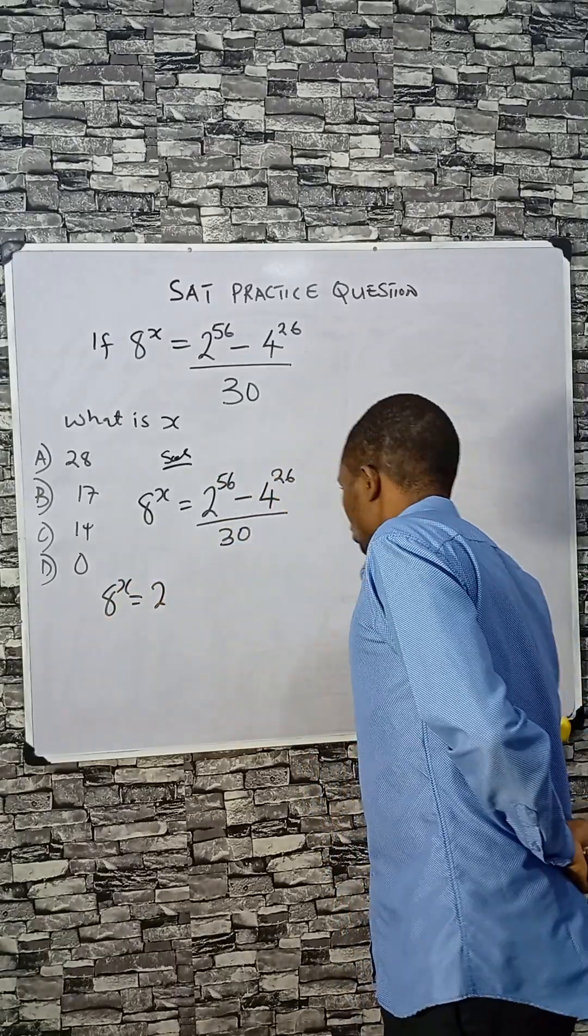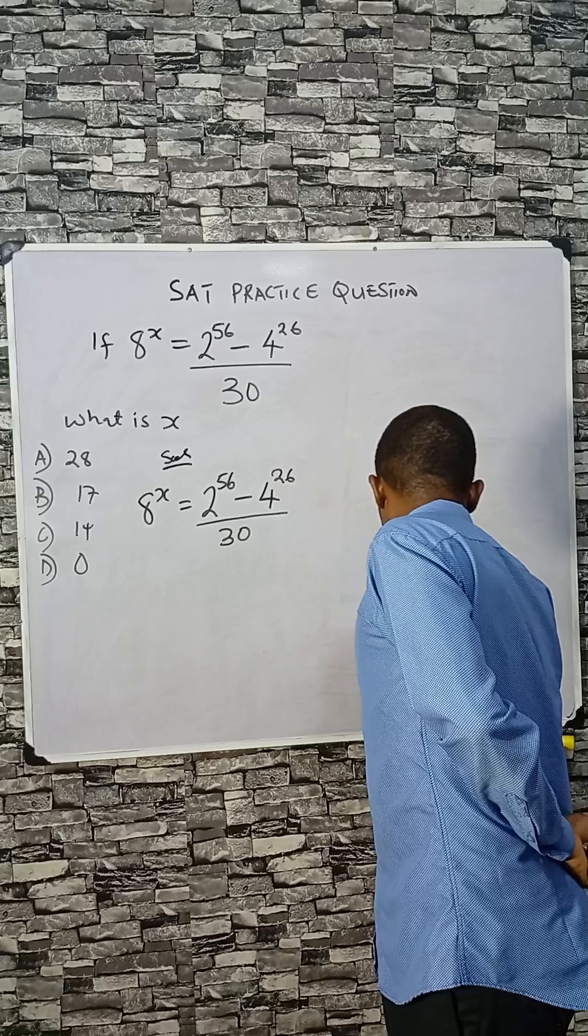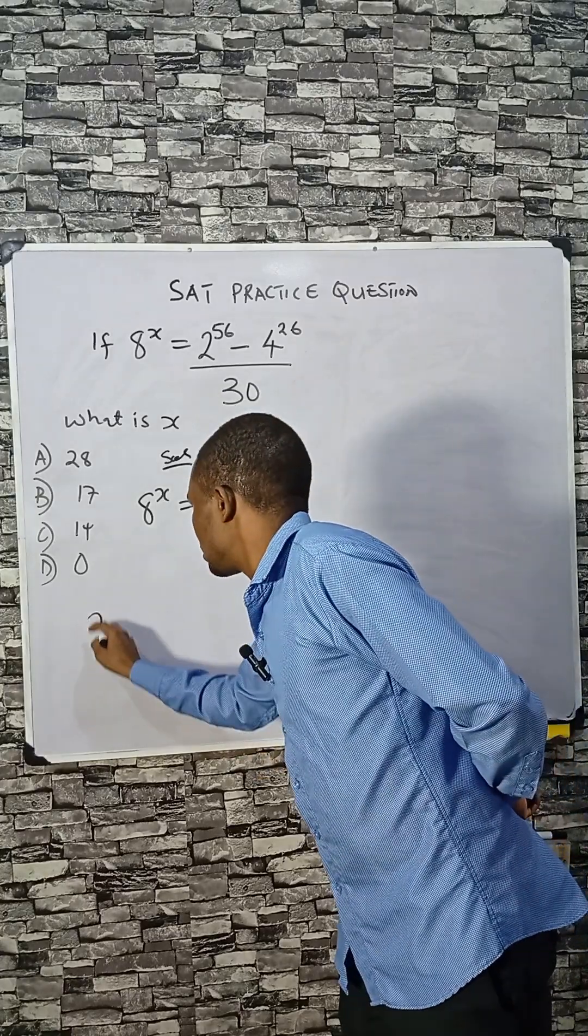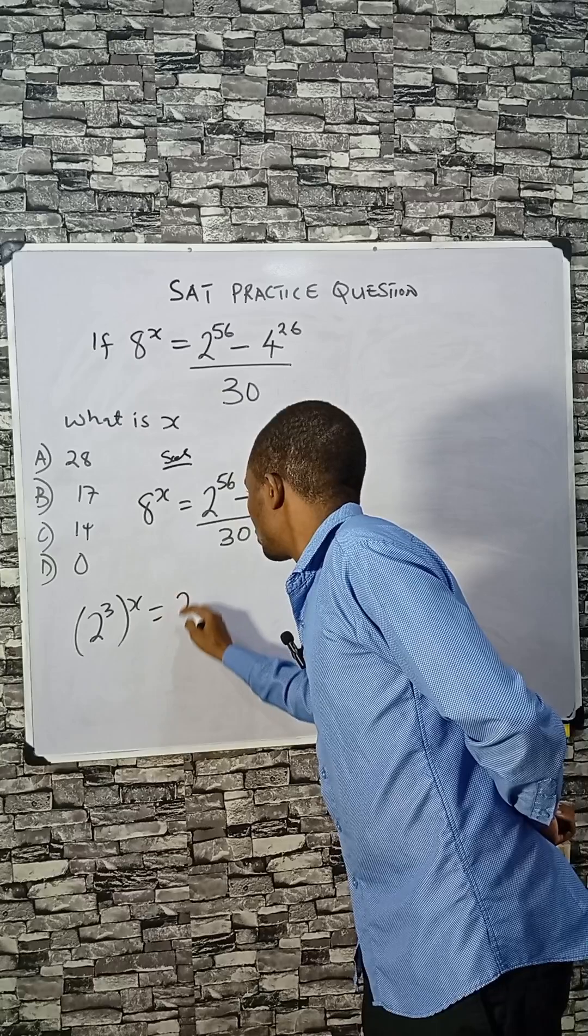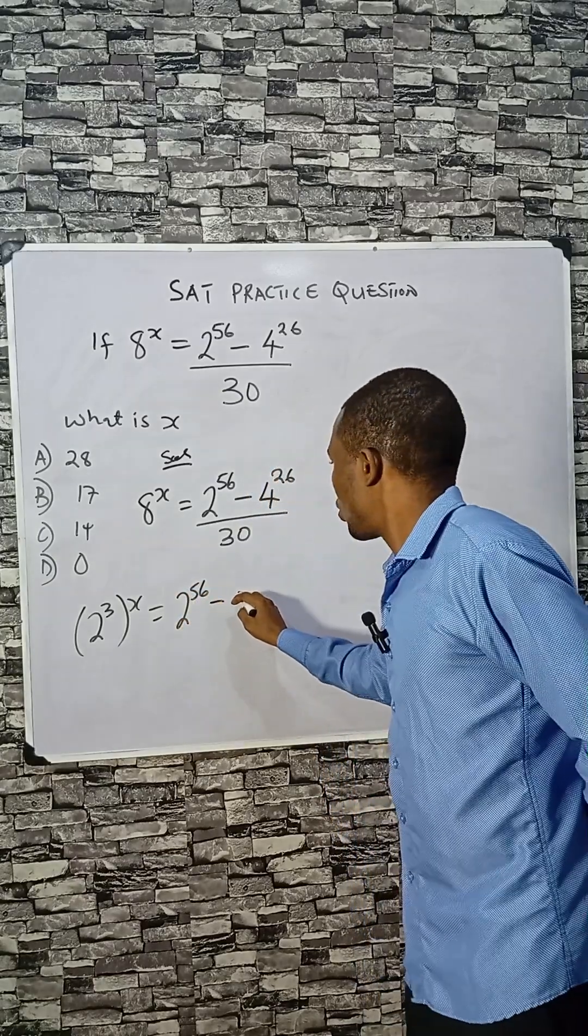Let's raise everything to power 2. Here we do that: 8 is 2 cubed raised to power x, equals 256 minus 4...